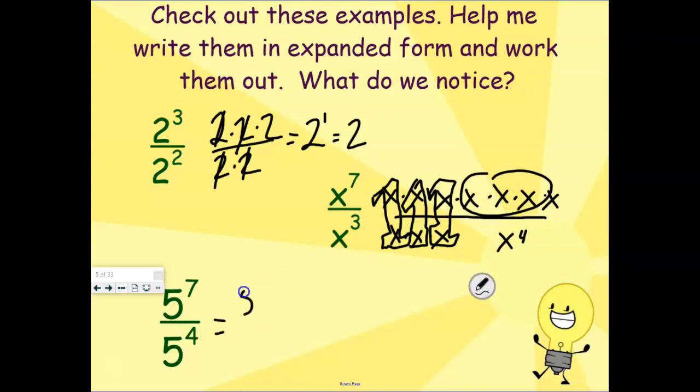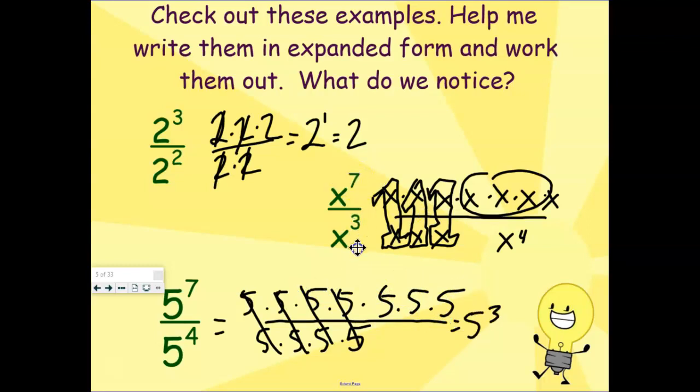Let's look at one more here. We have 1, 2, 3, 4, 5, 6, 7 fives, and we have 4 on the bottom. Well, 5 over 5, 5 over 5, 5 over 5 cancels out, and we are left with this. What's going on here? What pattern do we see happening?